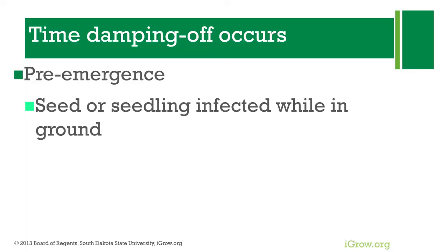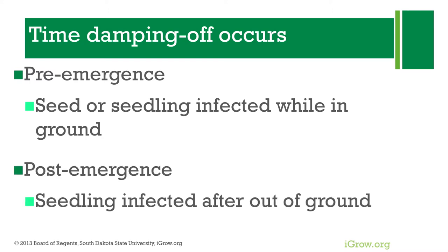Now, damping off can be of two forms. Pre-emergence damping off is where the seed or the seedling gets infected before it comes out of the ground. Post-emergence damping off is where seedlings emerge from the ground and get infected by the fungi that cause damping off.